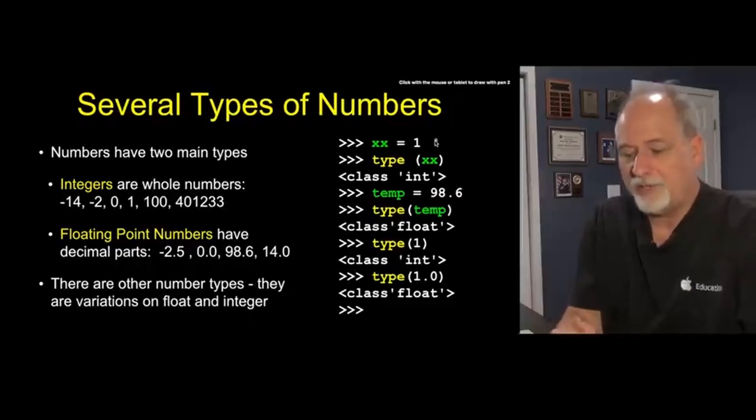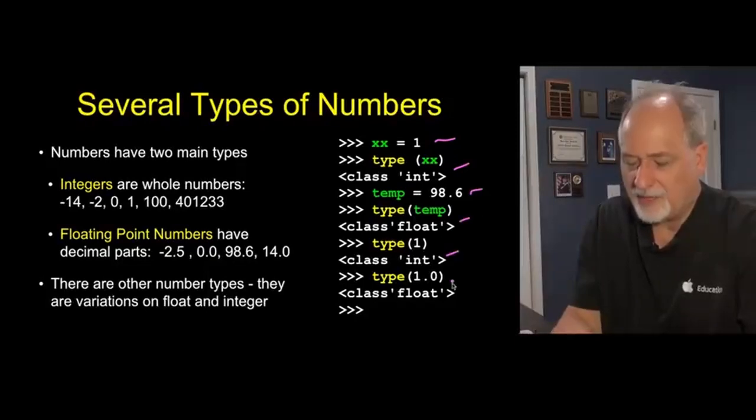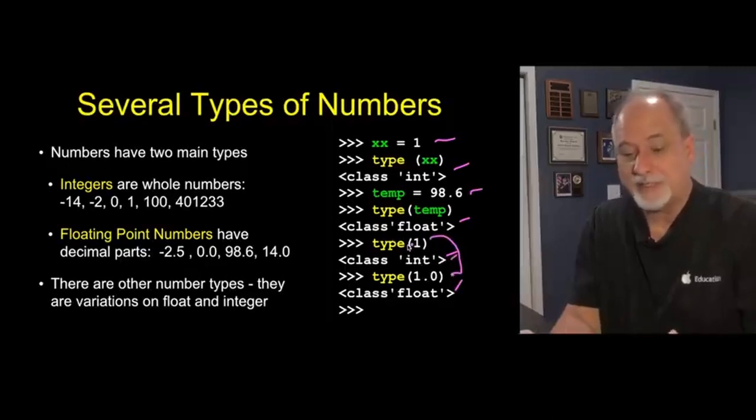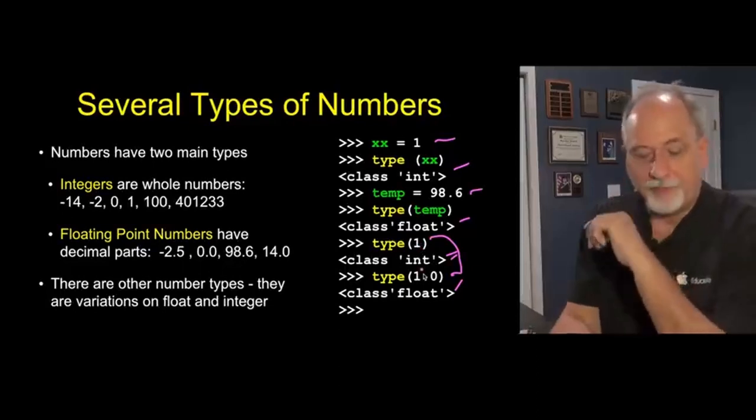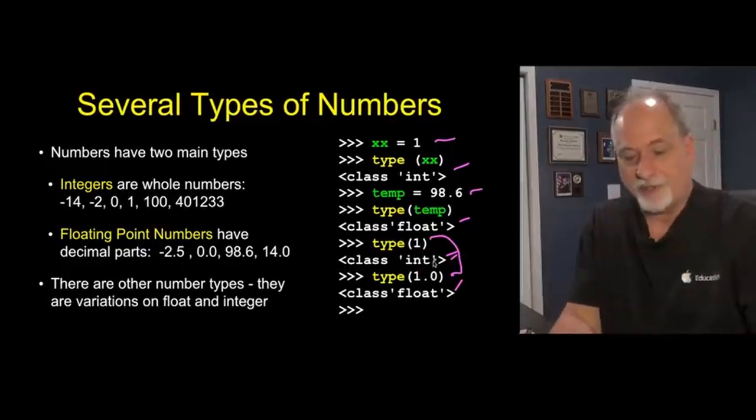There are even several types of numbers. One with no decimal, that's an integer number. 98.6 with a decimal, that's a floating point number. So constants can be both integer and floating point. What is the type of what's in XXX? What's the type of what's in temp? And what's the type of the constant 1? And what's the type of 1.0?